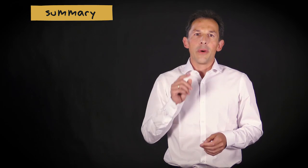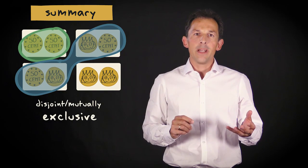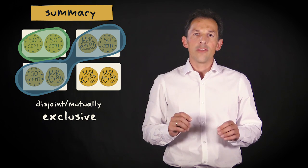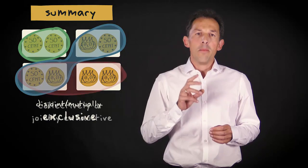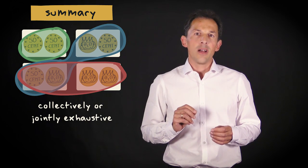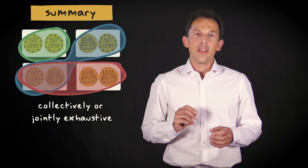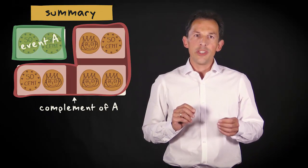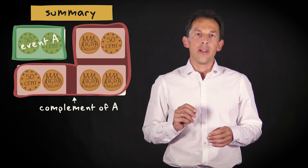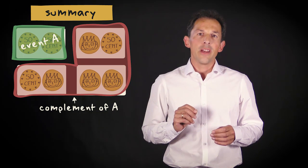Let me summarize what I have explained in this video. Events in the sample space that do not share any outcomes are called disjoint or mutually exclusive. Multiple events that together fill up the sample space are called collectively or jointly exhaustive. If there are just two disjoint and collectively exhaustive events in a sample space, they are each other's complement.